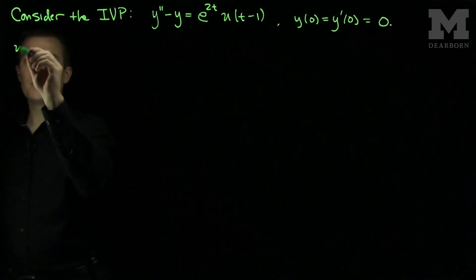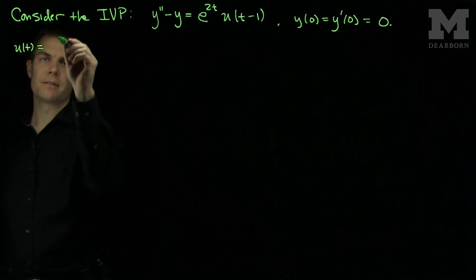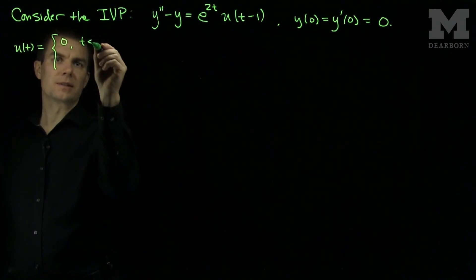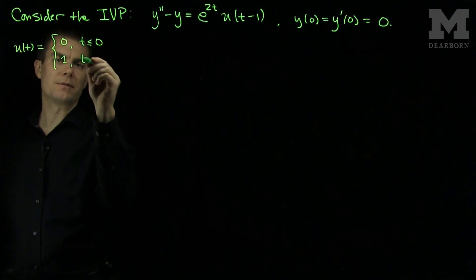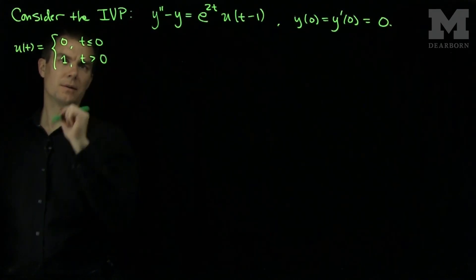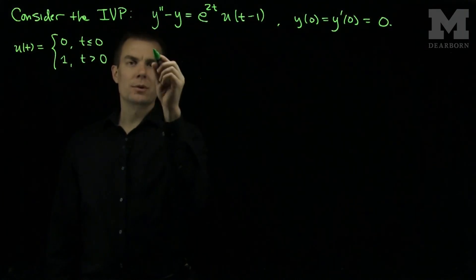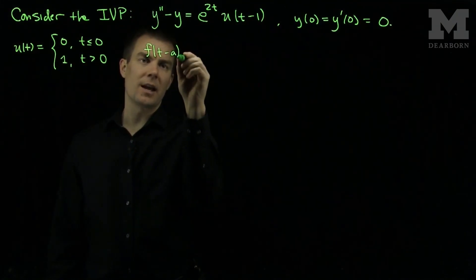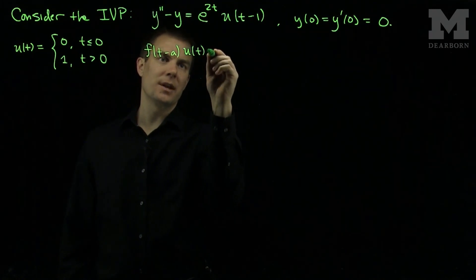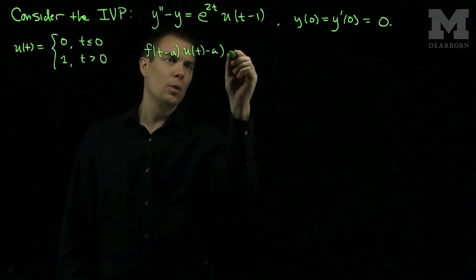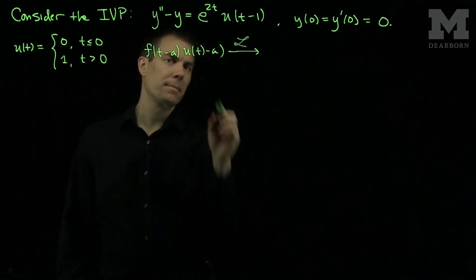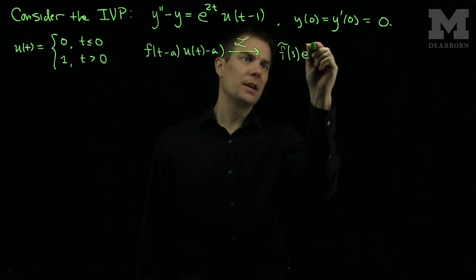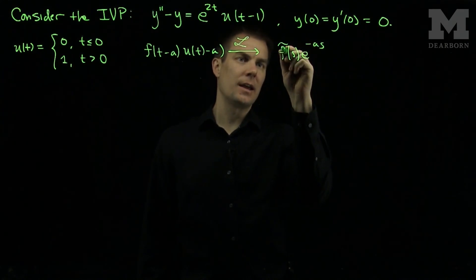Here u of t is the Heaviside function, which equals zero if t is less than or equal to zero, and 1 if t is greater than zero. We have the result that f of t minus a times u of t minus a will Laplace transform to f-tilde of s times e to the negative a s.